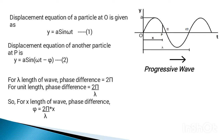Now we find the value of phi. For one full wavelength lambda, the phase difference is equal to 2 pi. By the unitary method, for unit length the phase difference is 2 pi over lambda. Since point P is at distance x from point O, for length x the phase difference is given by phi equals to 2 pi over lambda times x. We will substitute this value of phi into the displacement equation.